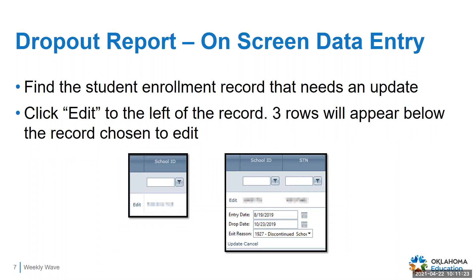Find the student that needs their enrollment record updated. Once you click that button, three rows will pop up where you can, if data is missing, enter the entry date, drop date, and exit reason. If you're only needing to update the exit reason, you can just update that field, click 'update,' and a pop-up will confirm the record was updated. The change will take effect on the report immediately, but it will take overnight for the student to drop off if you're changing the exit code to one that isn't considered a dropout. If you're changing to an exit code that we're expecting to have a subsequent enrollment for and the student is still appearing, you can reach out to us to look into whether the student has had a name change or something between districts causing the STN to update.